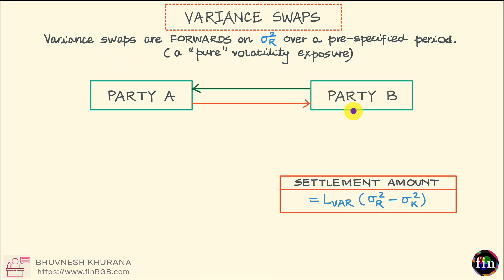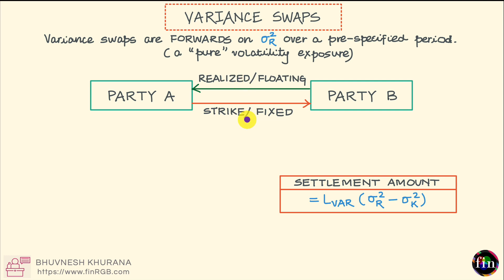I contact another financial institution — a big bank with a prominent equities derivatives desk, or a hedge fund — and ask the salesperson to help me structure a variance swap that fits my needs. In this variance swap, I'll be taking the position of the party receiving realized variance and paying out strike or fixed variance. The reason being that if volatility indeed spikes upwards, I want to make a gain because I am receiving realized and paying fixed.